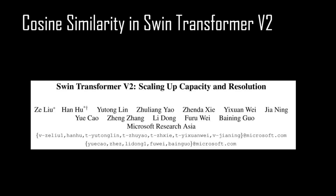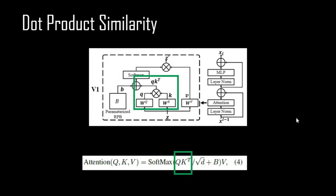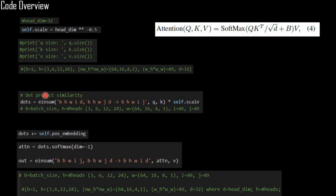If we go to the Swin Transformer version 2 paper and look at the first figure, we can see that in version 1 we have dot product similarity between query and keys, and that is what we use in our code. We have Q, K, V and we did dot product similarity using a function where the input is Q and K.